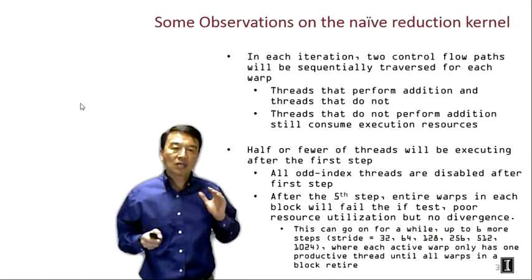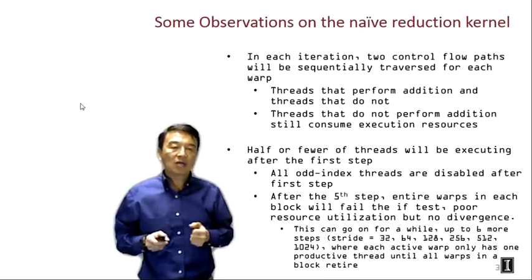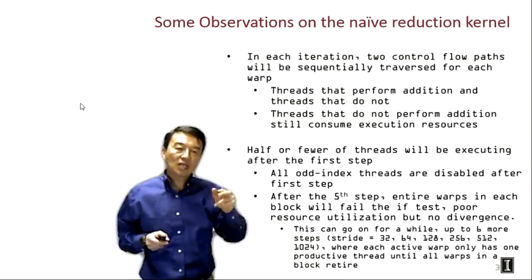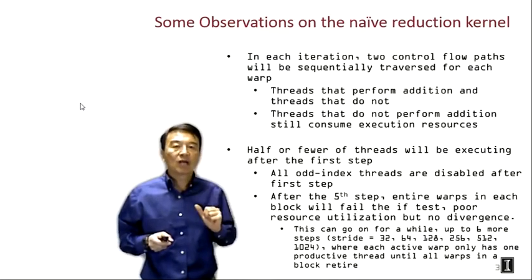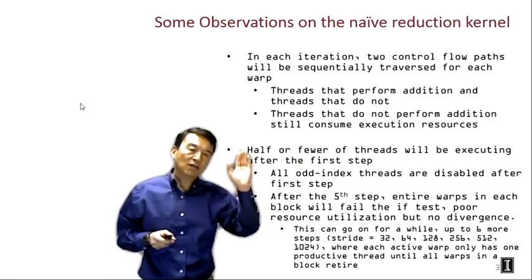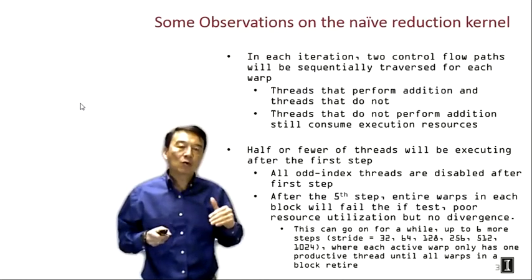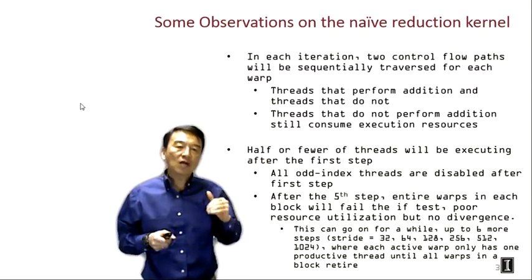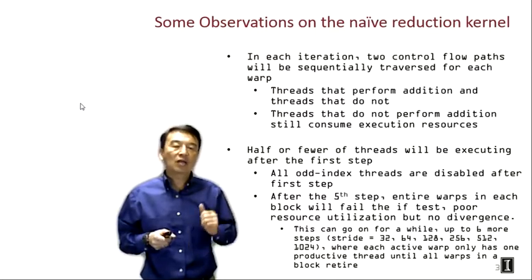We'll make some observations about the naive reduction kernel developed in the previous lecture. Looking at the loop that computes the reduction steps: during the first iteration all threads are active, but in the second iteration every other thread is turned off, and in the third iteration only one out of every four threads is active. We see a pattern of active-inactive threads in each warp, creating two control flow paths every warp traverses. Threads that don't perform addition still consume execution resources due to control divergence.